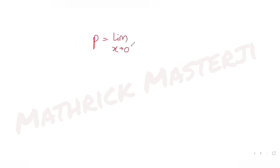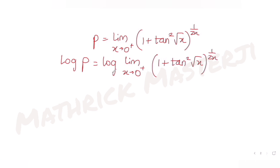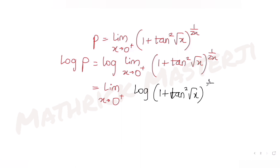If I take log on both sides, I get log p equal to the log of the limit as x tends to zero plus of (1 + tan√x) raised to 1 over 2x. Now I can bring the log inside and take the limit out, so: limit x tends to zero plus, log of (1 + tan√x) raised to 1 over 2x.